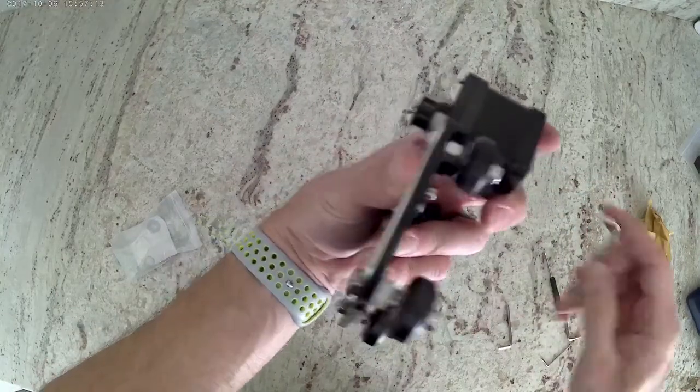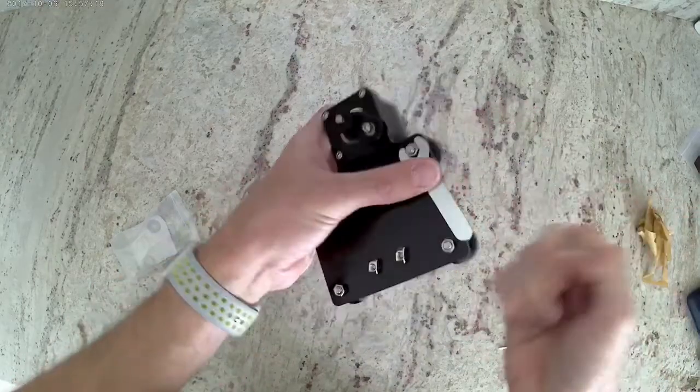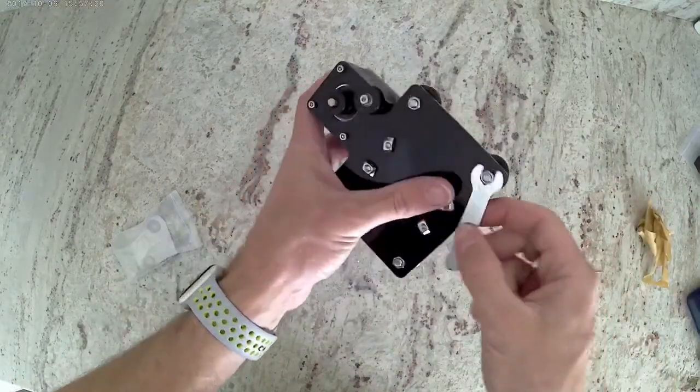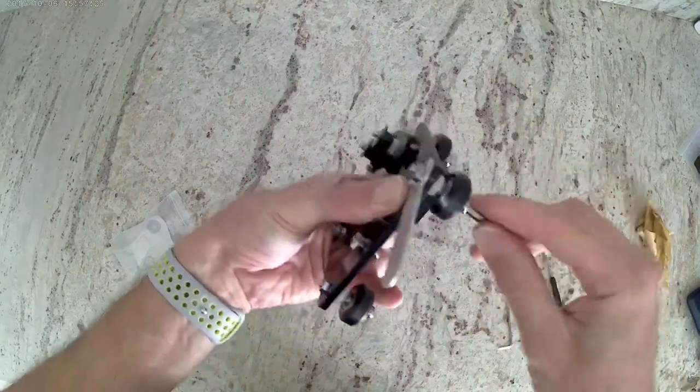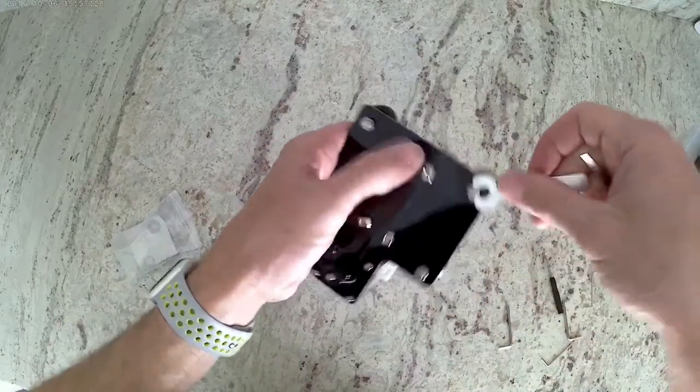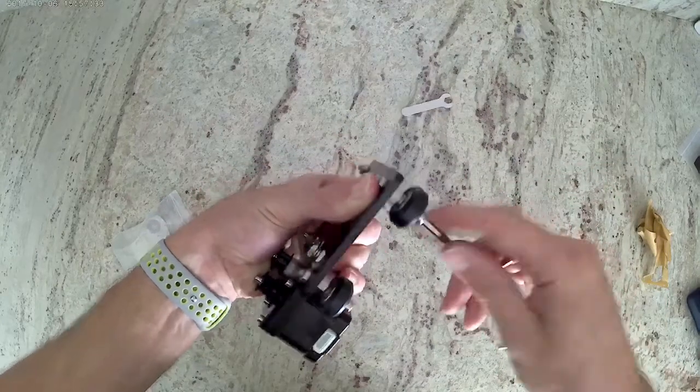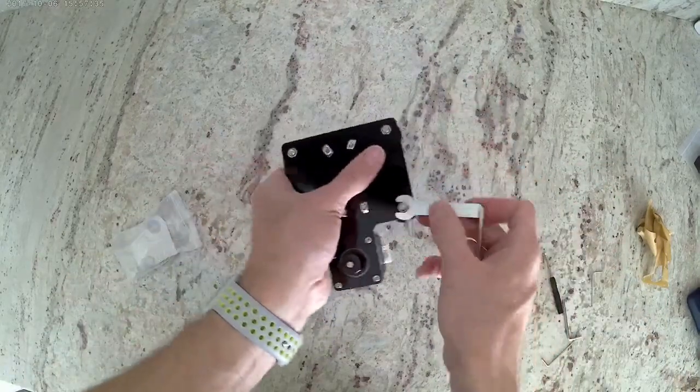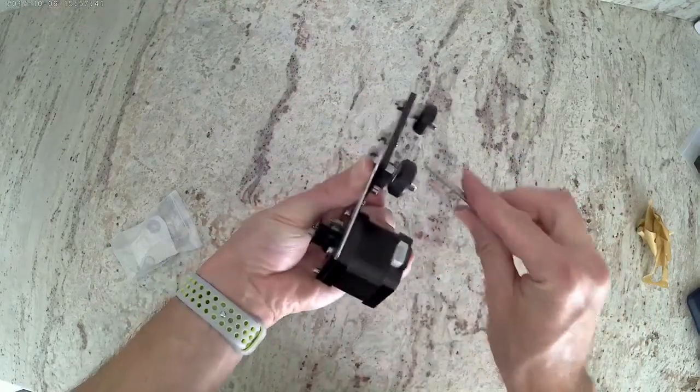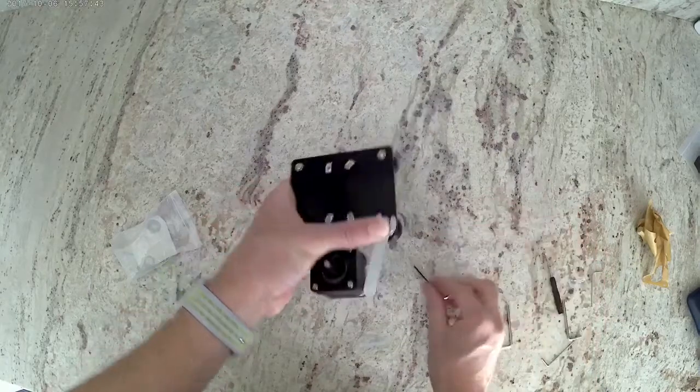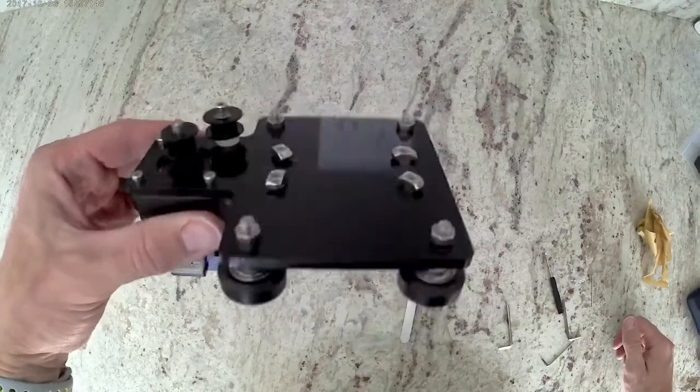Now we can use our wrench and another Allen wrench to go through and tighten those down. Don't over tighten them. You don't want them to wiggle and move around though, but the wheels still need to be able to turn. Okay, and now we are all done with the X motor assembly. This is what it should look like.